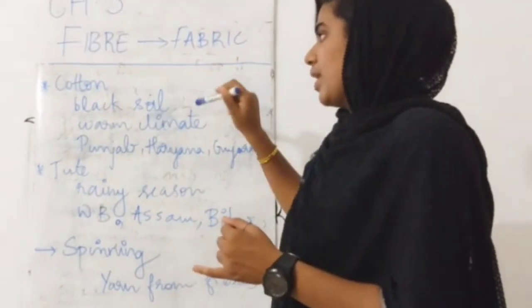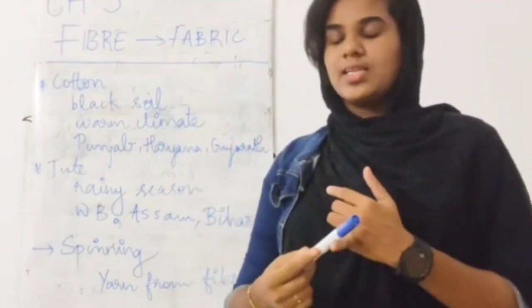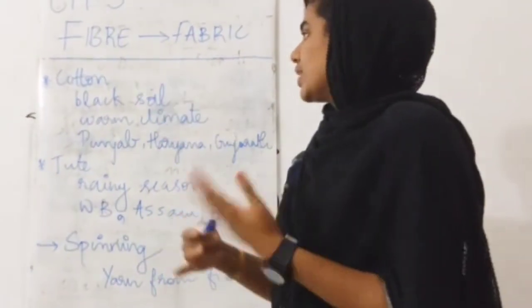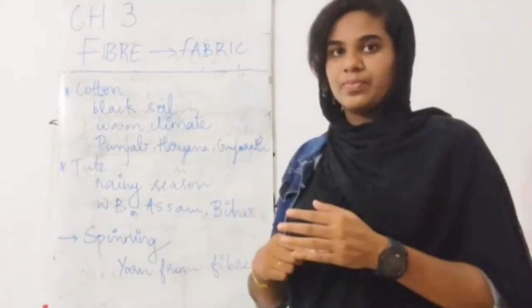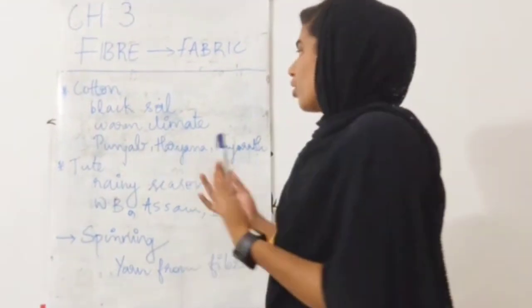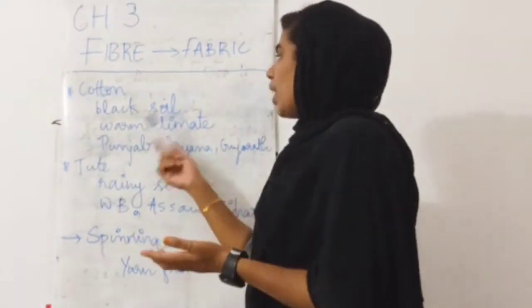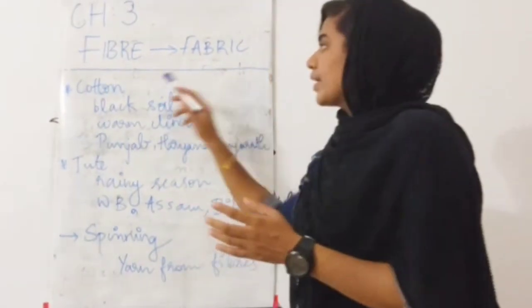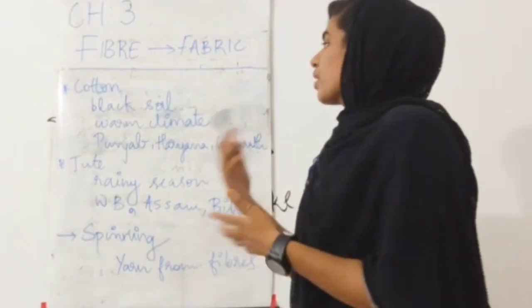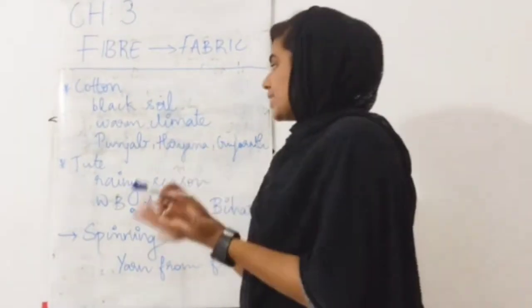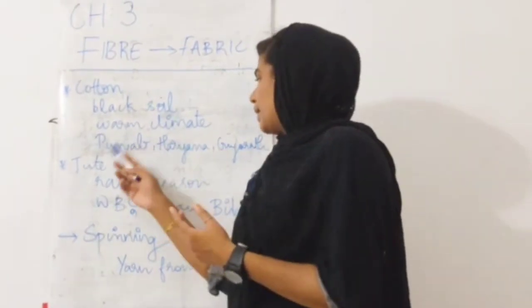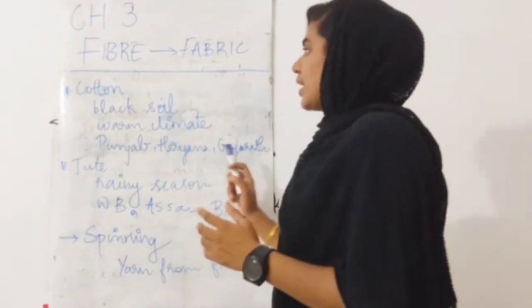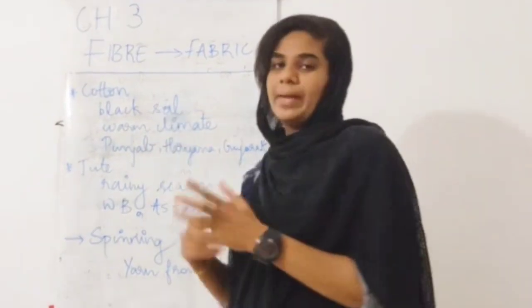Cotton grows in a warm climate. Cotton is mainly grown in states like Punjab, Haryana, and Gujarat.